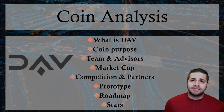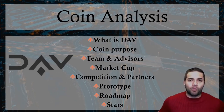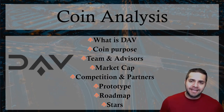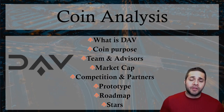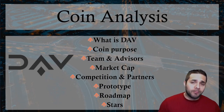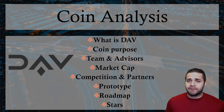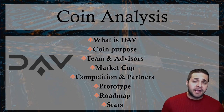What does my coin analysis of DAV consist of? First, we have what is DAV, the coin purpose, the team and advisory team, the market cap, the competition and partners, if they have a prototype, the roadmap or the goals of the project, and then a star rating between 1 and 10 where I give the pros and cons of DAV.